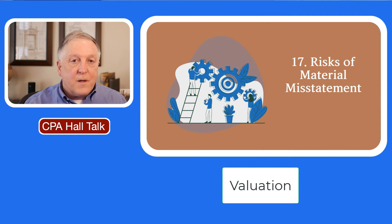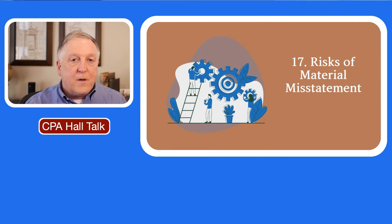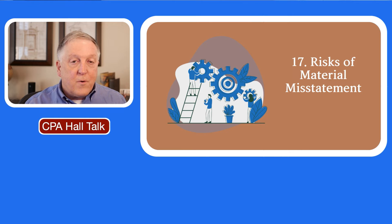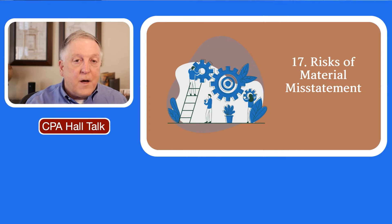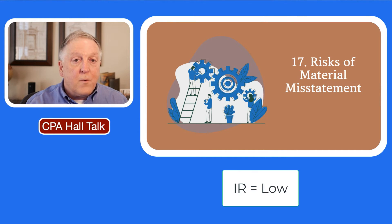Think about the valuation assertion, and let's say the estimate of the allowance for uncollectibles is complex and very subjective. When you look at the valuation assertion, the inherent risk is going to be high, so you've got high inherent risk, high control risk, and high RMM. Now think about another client where they hardly ever write off any bad debt. When you look at the allowance for uncollectibles, it's not complex, there's not much to do. So your inherent risk for the valuation assertion in that example could very well be low.